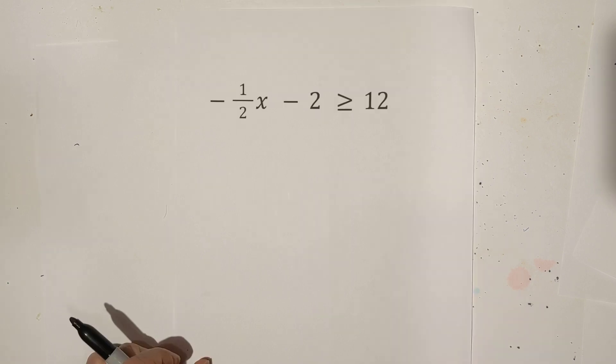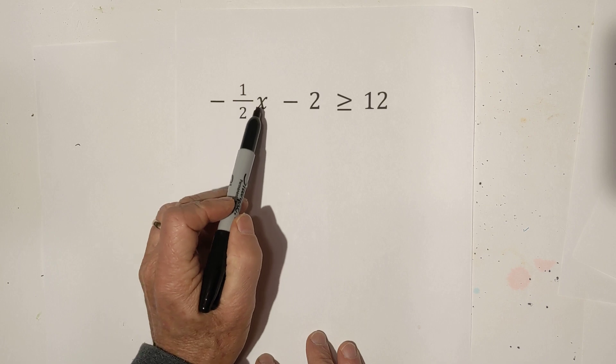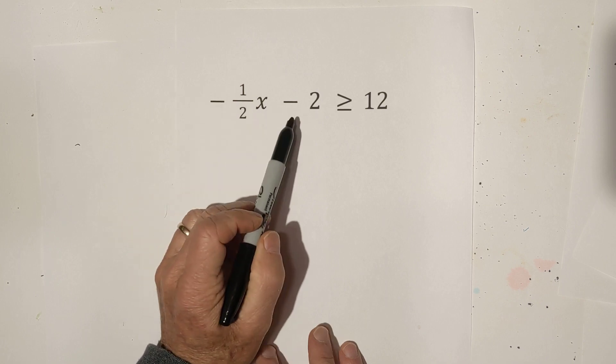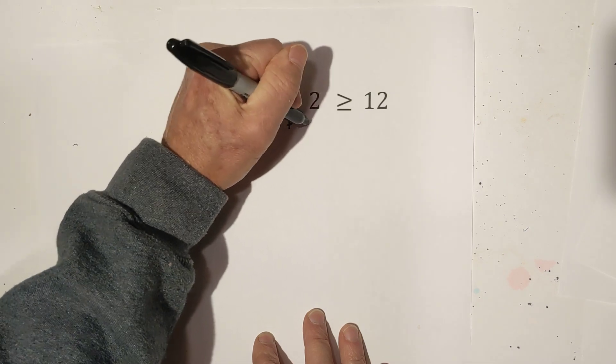Let's work another one. In this example we have a negative fraction variable. So what are we going to do? Let's begin by getting rid of this 2.